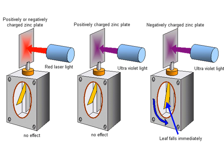Here we can see what happens in the effect on a gold leaf electroscope. The gold leaf is charged in all cases. In the first case, with red light — positively or negatively charged — the red light is just too low a frequency; there's not enough energy under E = hf to release photoelectrons. The positively charged zinc plate has no effect either, regardless of the frequency of the light, because it's positively charged and holding on to its electrons far too tightly. The negatively charged zinc plate, however, is only too happy to give up electrons, especially when you give it high energy photons from a UV light.